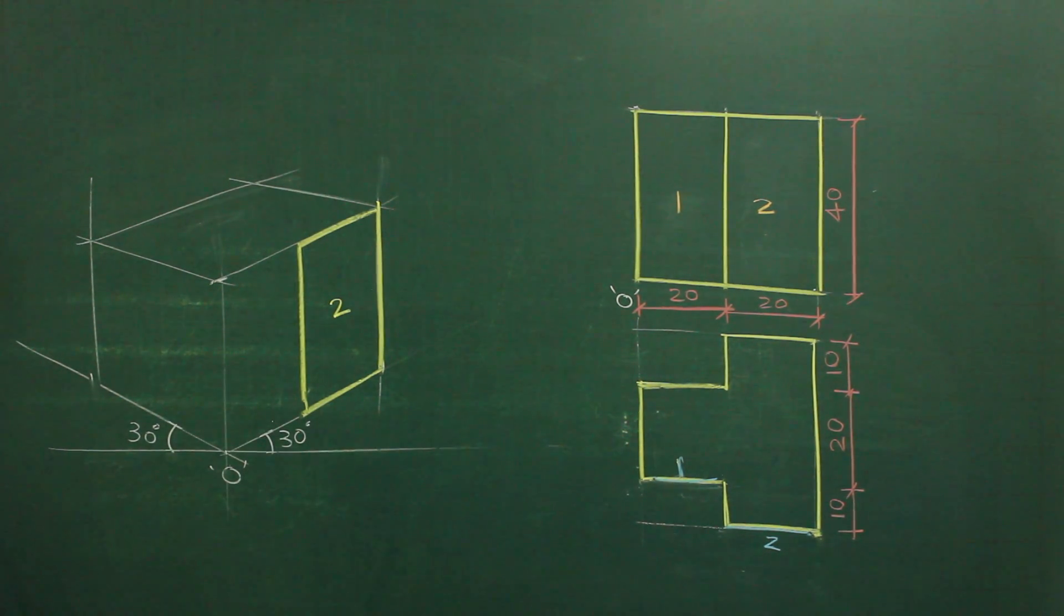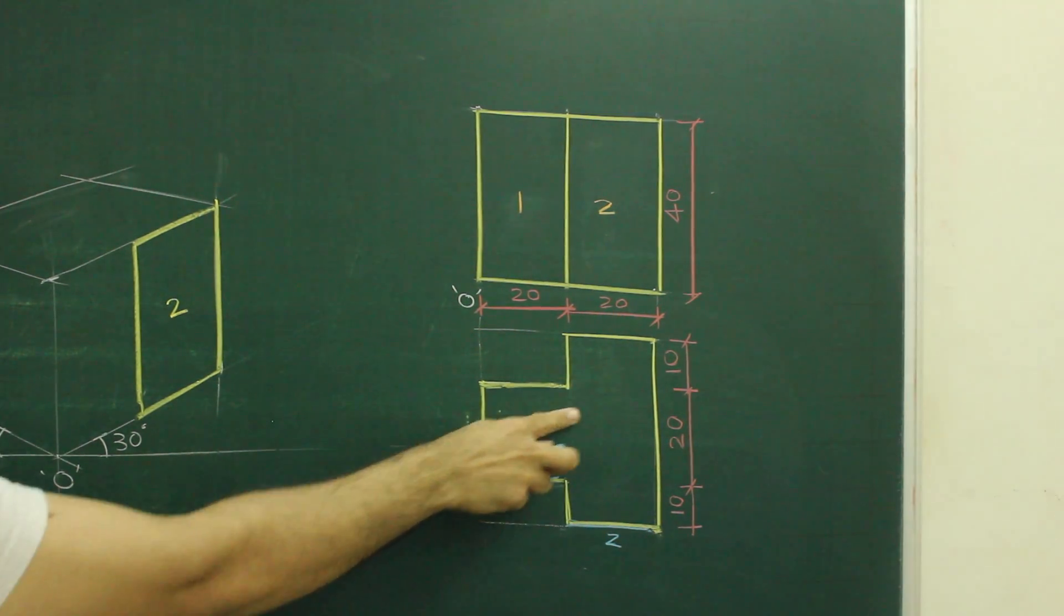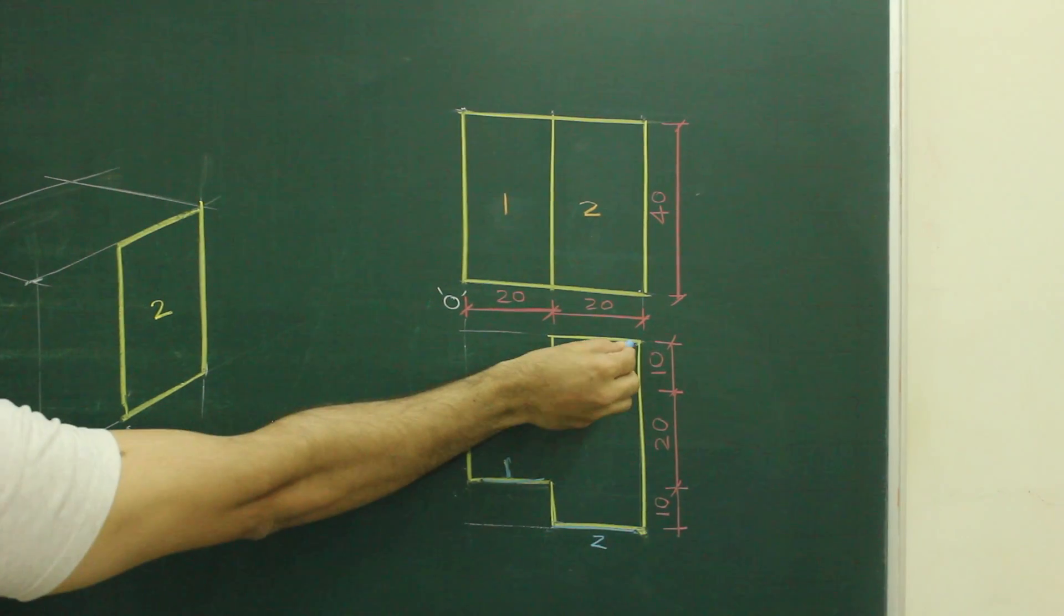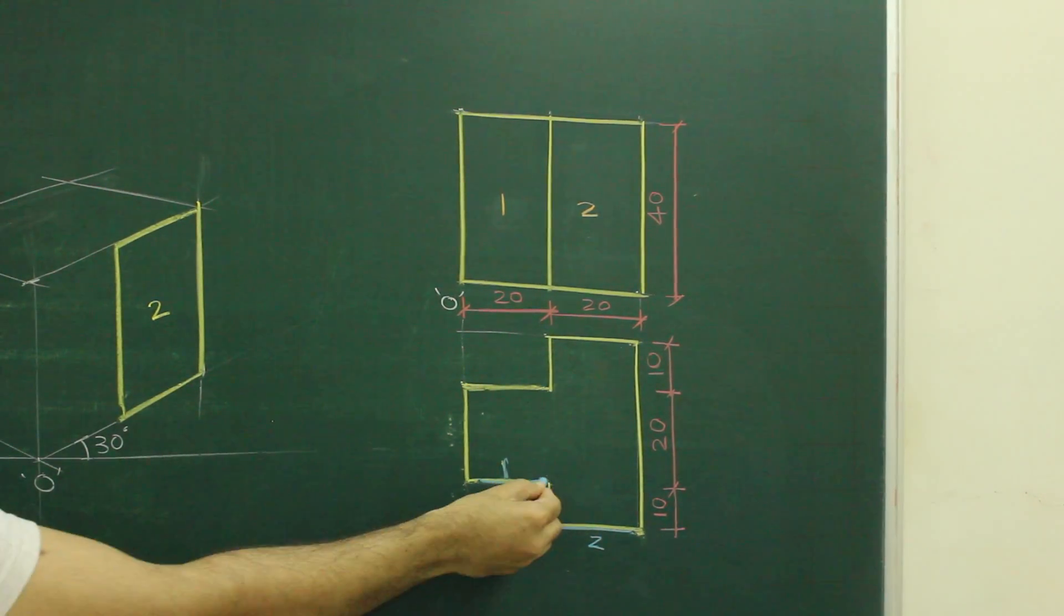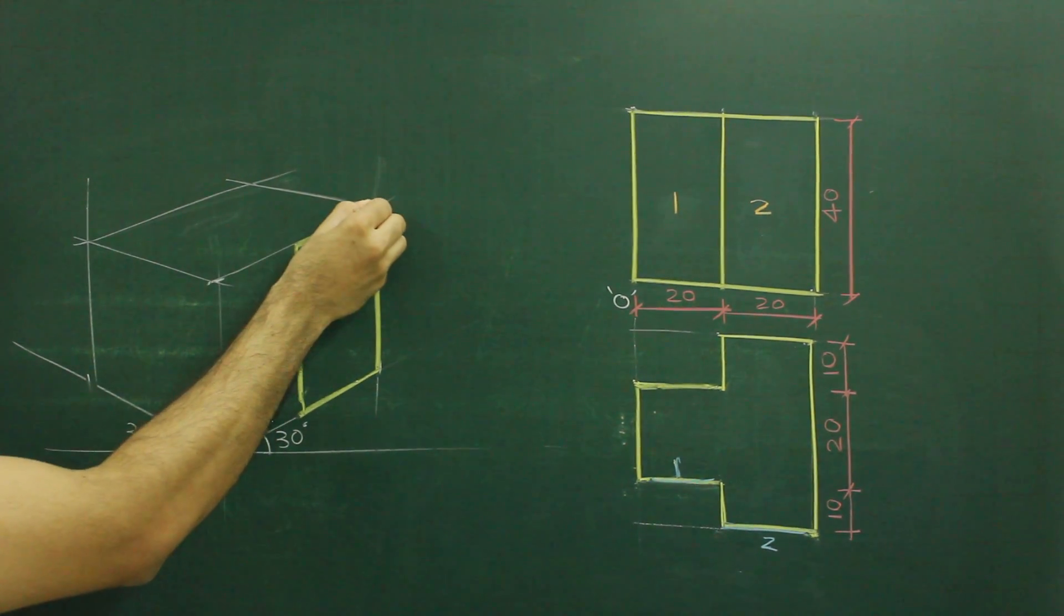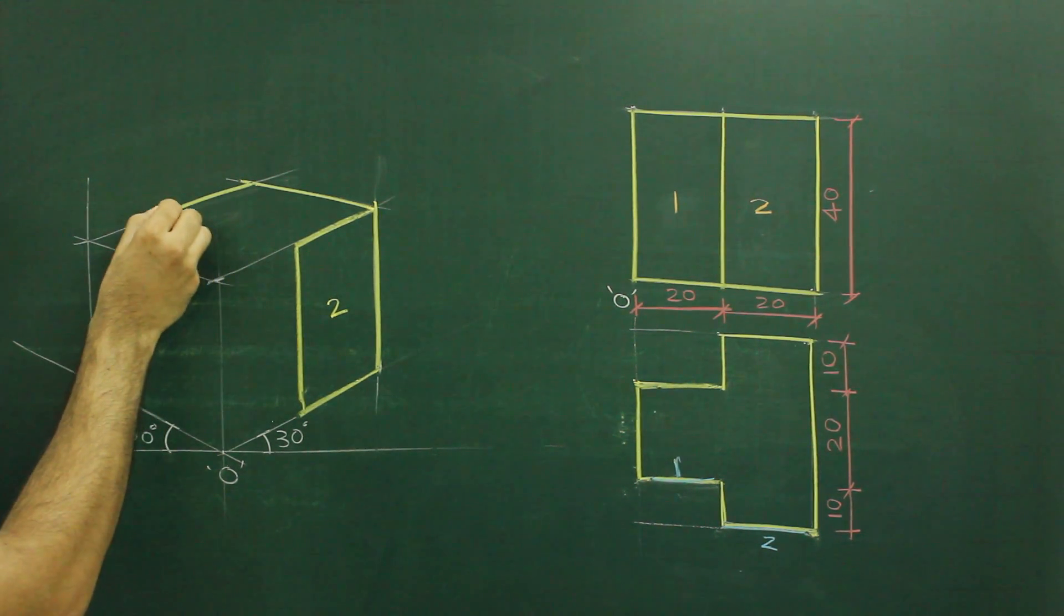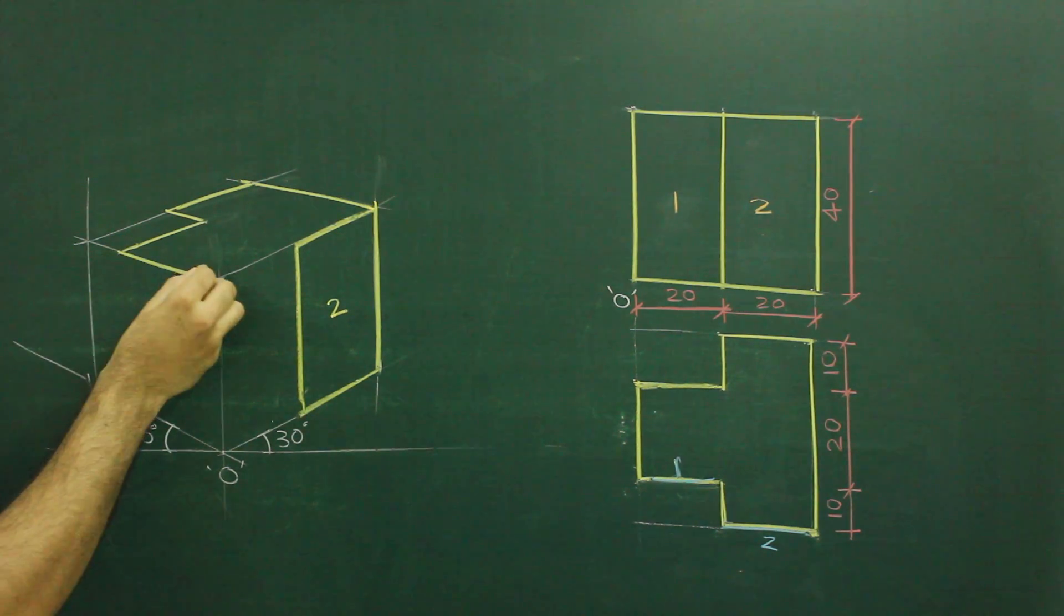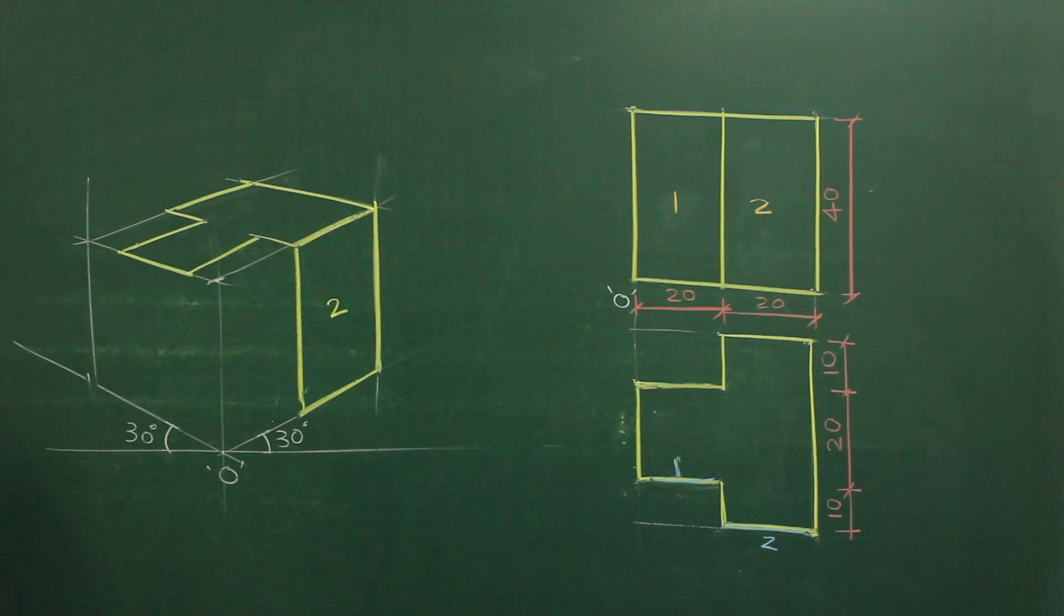Now if you see this part 2 in top view, it is here. And if you see this, top view is entire one unit. So we can draw this top view as it is. We have to go behind by 40, then 20, then again 10, then 20, 20, 20, and then 10. So from here we will go 40, then we will take 20, then we will come inside by 10. Again we will go outside by 20, again 20, again 20, and then 10. So we have drawn top view.